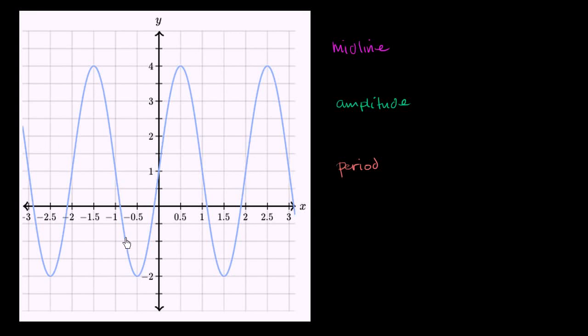We have a periodic function depicted here. What I want you to do is think about what the midline of this function is. The midline is a line, a horizontal line, where half of the function is above it and half of the function is below it.